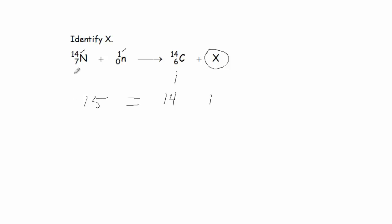The subscripts on the left side are 7. That is, comes from 7 plus 0. And that must equal the subscripts on the right side, which in this case is 6 plus 1.